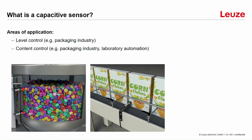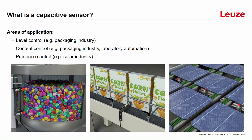Another main application is content control. In this picture you see also an example from the packaging industry, where the capacitive sensor is used to detect if there are really contents in every package or not. And last but not least, the third main application is presence control — here you can see an example from the solar industry.